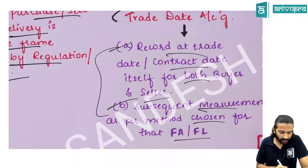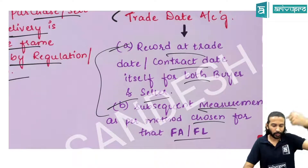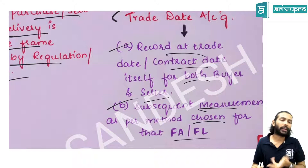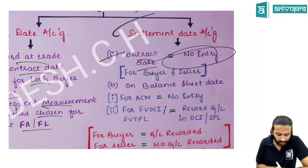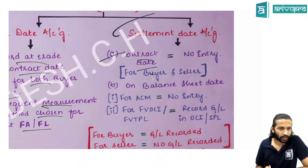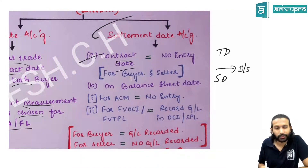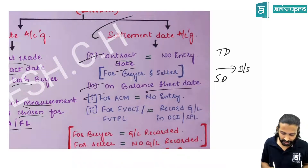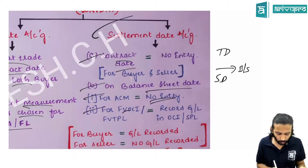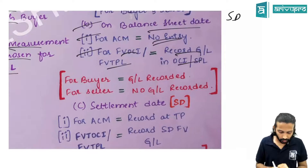Subsequent accounting after trade date depends on the measurement category. For ACM assets, subsequent fair value changes between trade date and settlement date are ignored. For FVTOCI assets, the fair value difference between trade date and settlement date goes to OCI. For FVTPL assets, it goes to P&L. Under settlement date accounting, no journal entry is passed on the contract/trade date. On any balance sheet date between trade date and settlement date, only gain or loss is recorded — for FVTOCI and FVTPL assets.